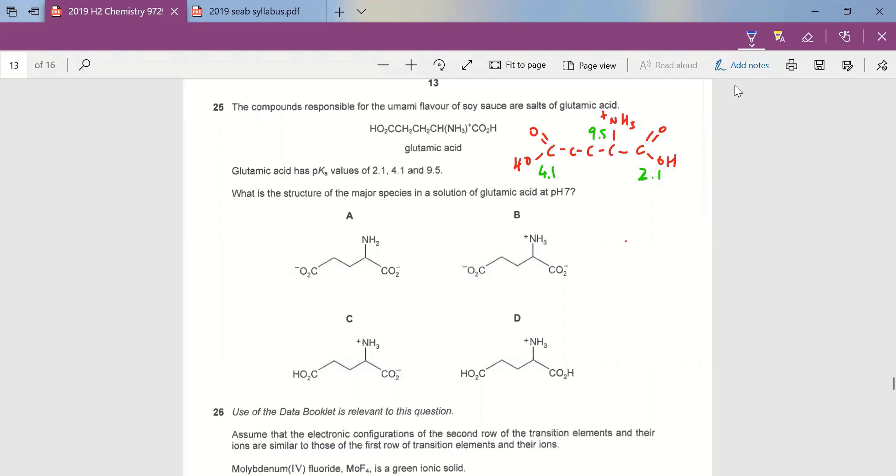So at pH 7, you can see that the two carboxylic acid groups are more acidic than the solution, so they are going to deprotonate and become COO-. So options A and B have this, so C and D are out.